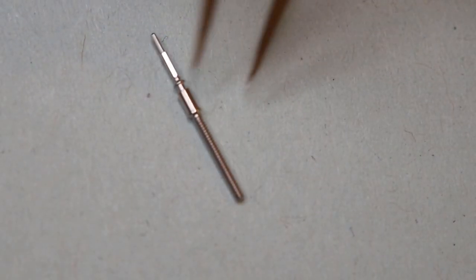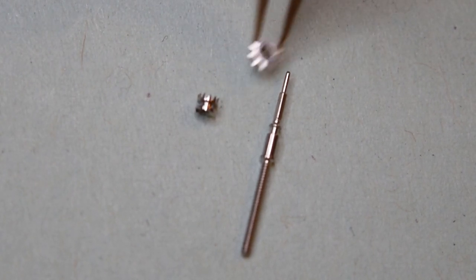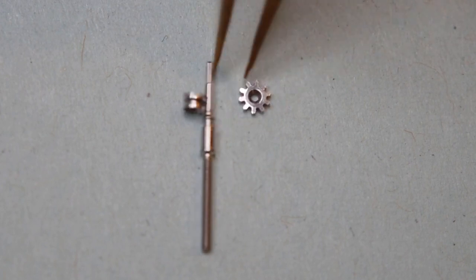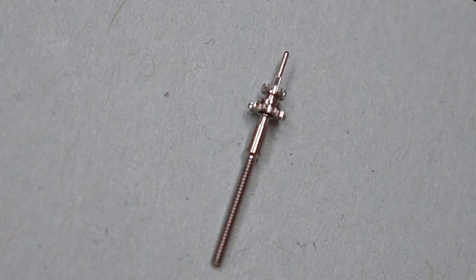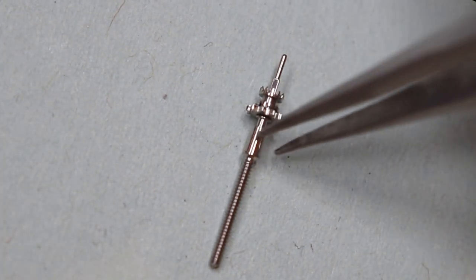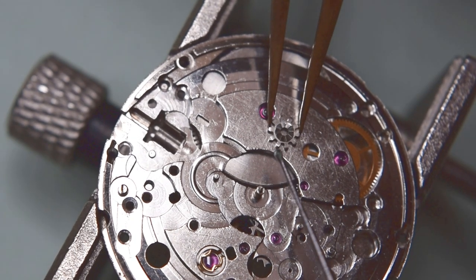And now the winding stem, because this one was missing so I bought a new one and this will fit. And so it looks with the winding pinion and the clutch. So let's go with the assembly of the movement.